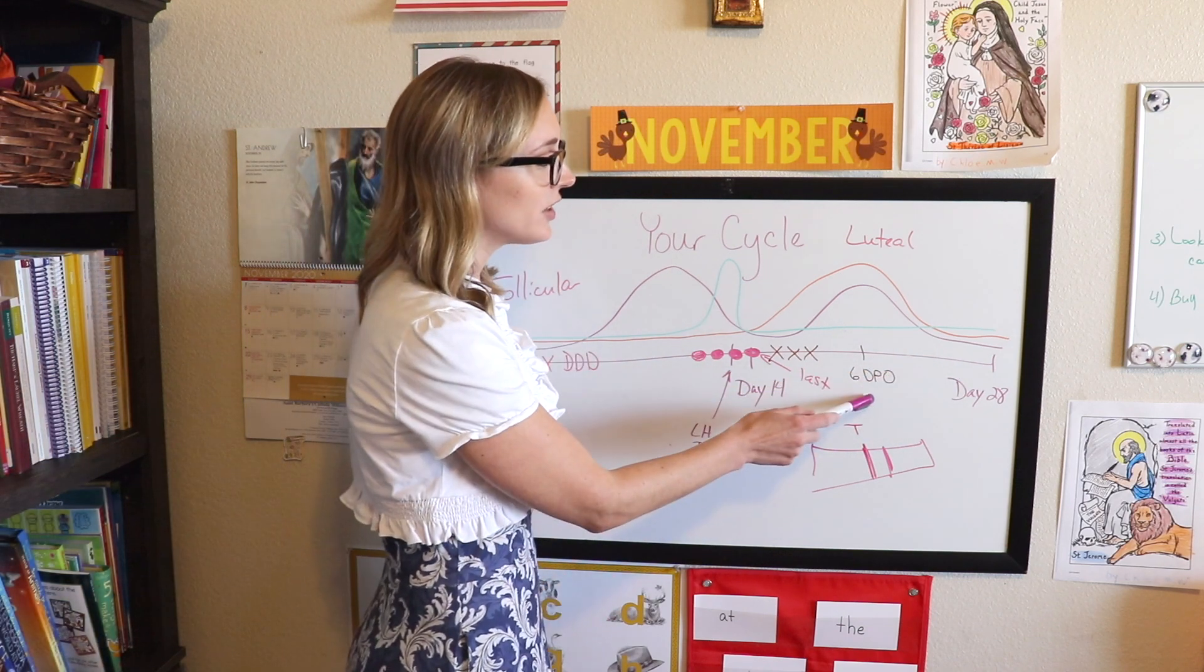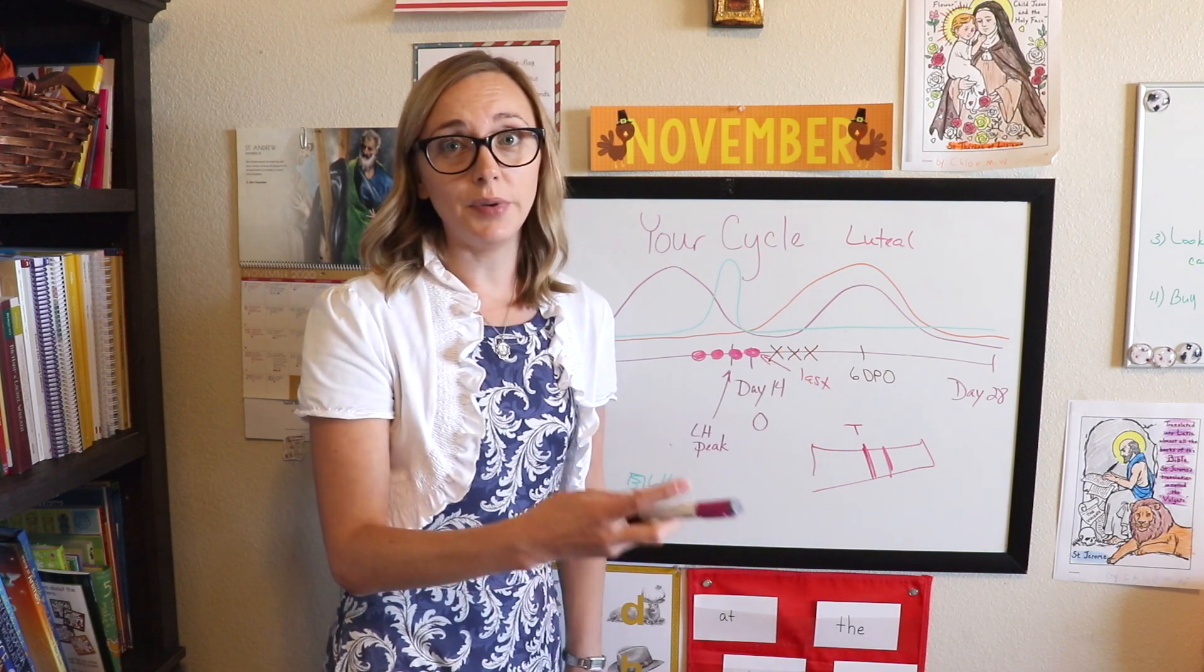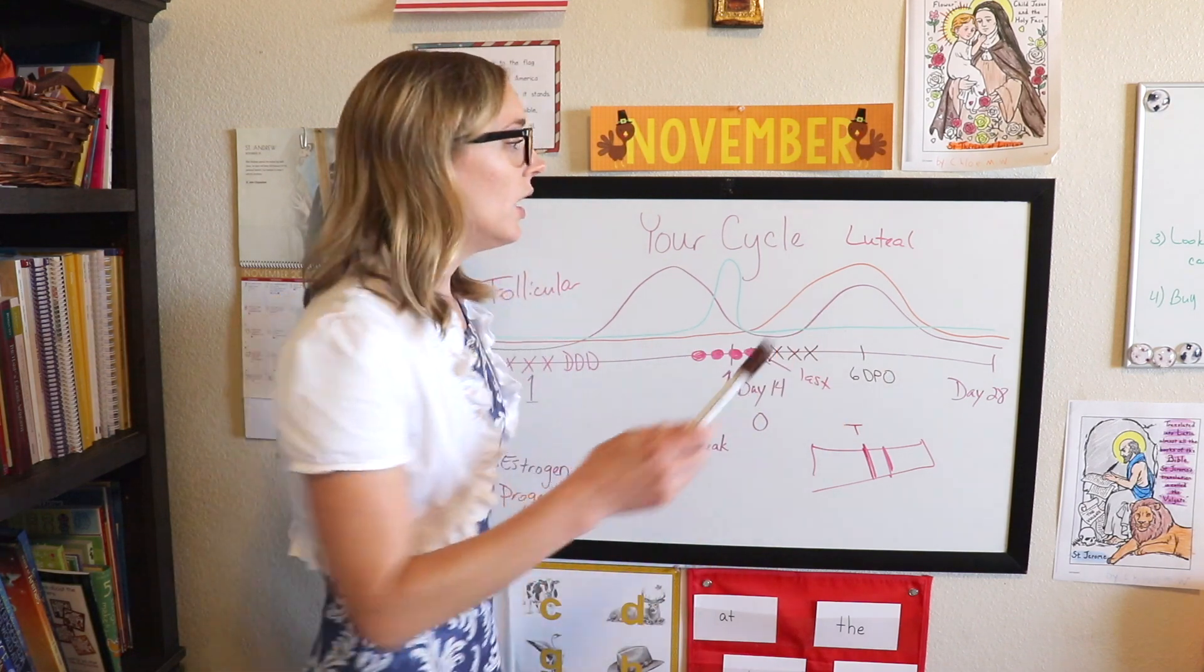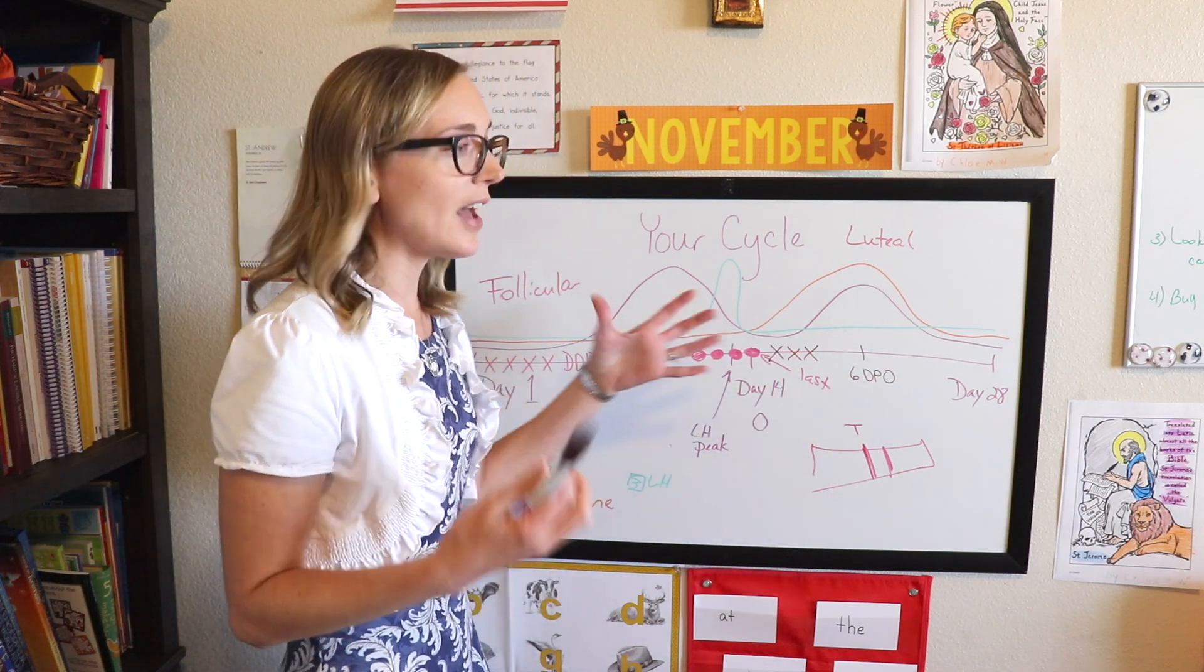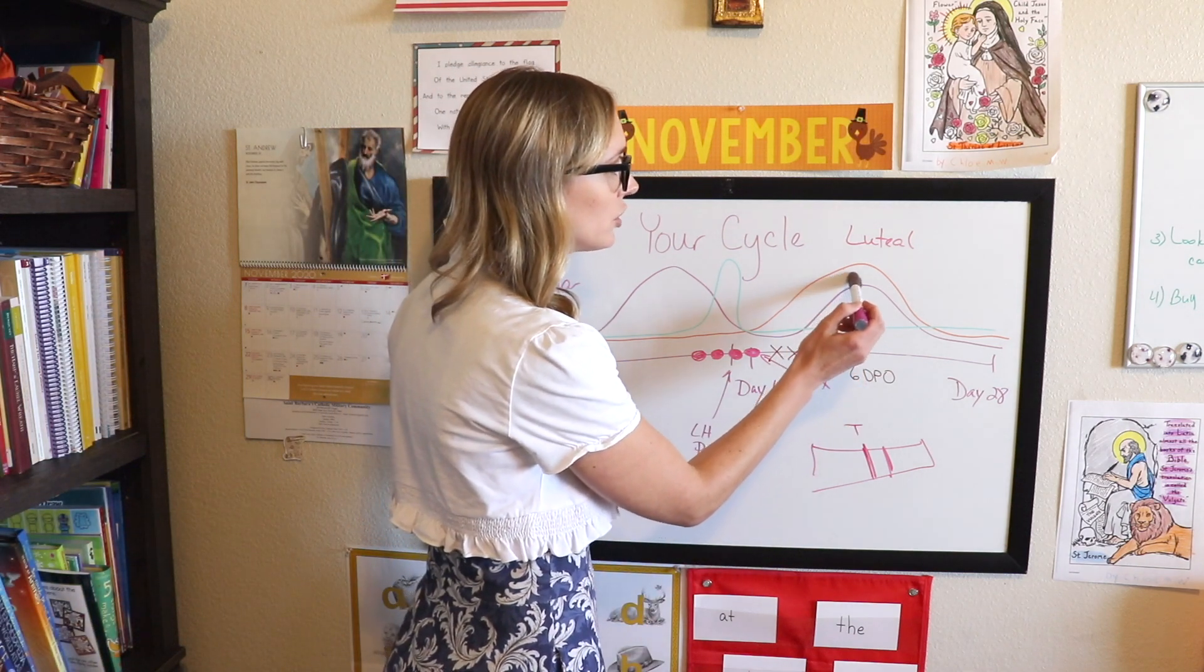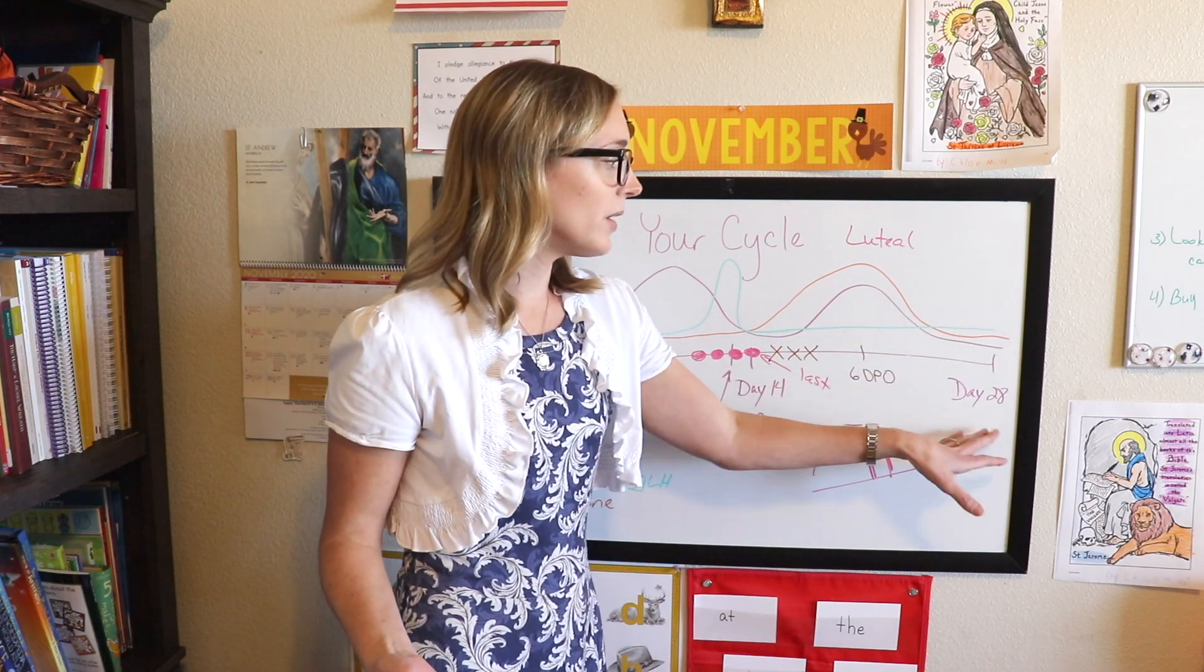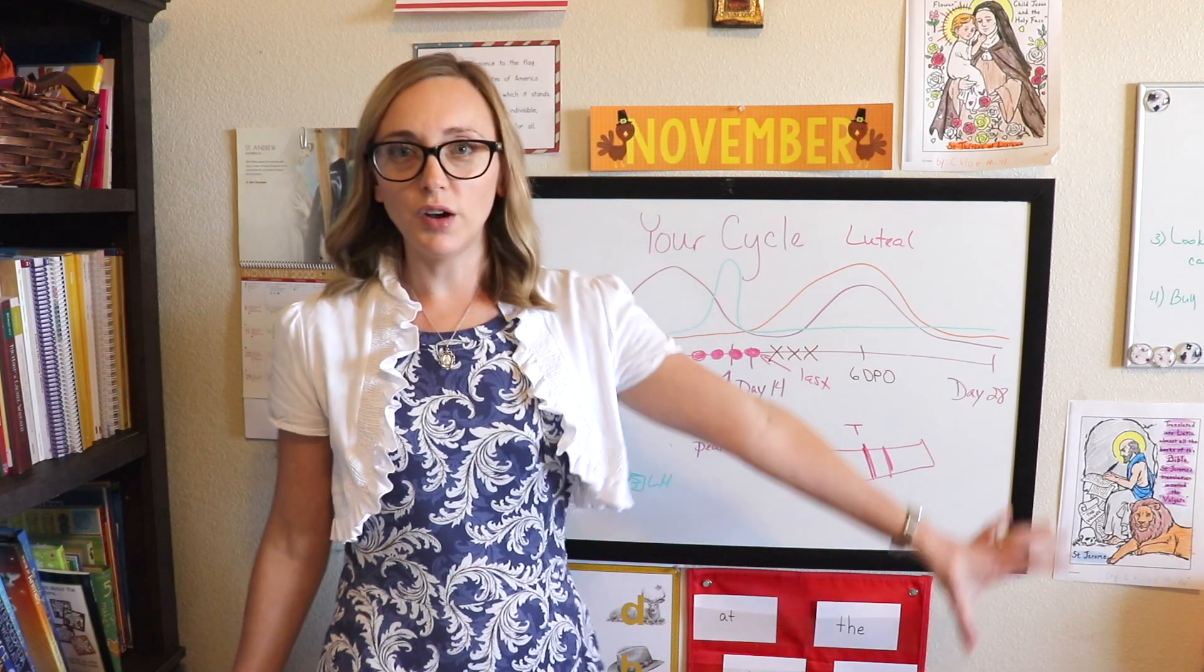If for some reason the conception didn't occur, or even if the conception occurred and the baby didn't implant, which is why please don't ever use birth control because this could happen in that situation. And that's like abortive. But if everything just naturally, it just doesn't happen, implantation, then these hormones are going to drop. This egg is going to kind of travel through unfertilized and then you would have your period at the end of your cycle and it would start all over again.